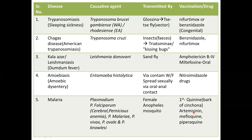Another drug recently discovered is artemisinin, which comes from the artemisia plant. A Nobel Prize was awarded for this discovery. If you want to know about the Nobel Prize and Nobel laureates, I'll link it in the i-button and down in the description in the playlist — definitely go check it out.